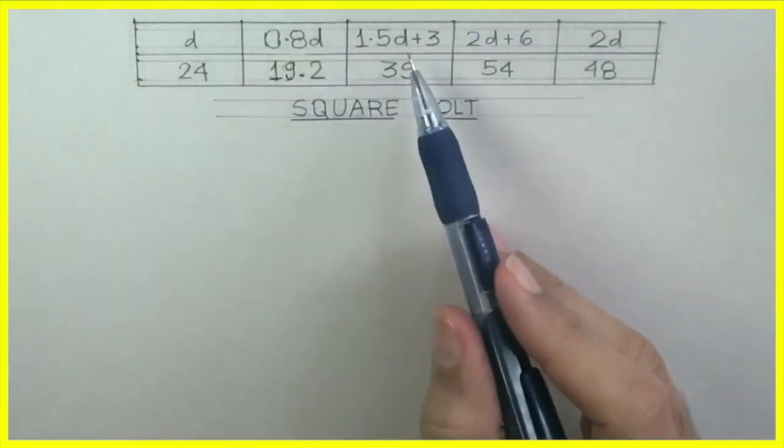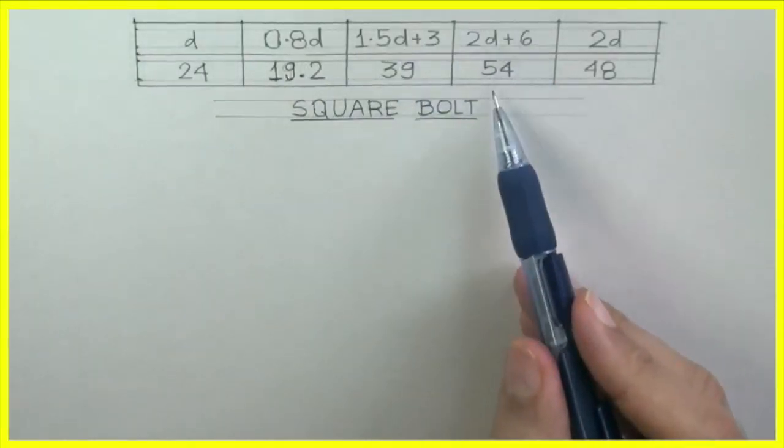Square bolt: d is 24, 0.8d, 1.5d plus 3, 2d plus 6, and 2d. We will find all these values.